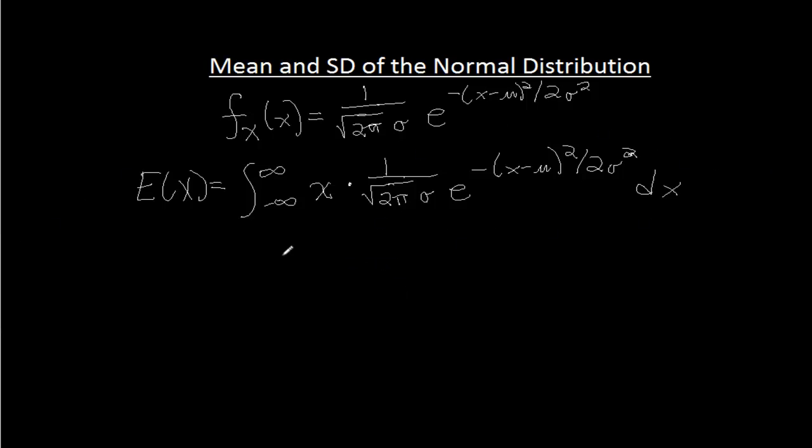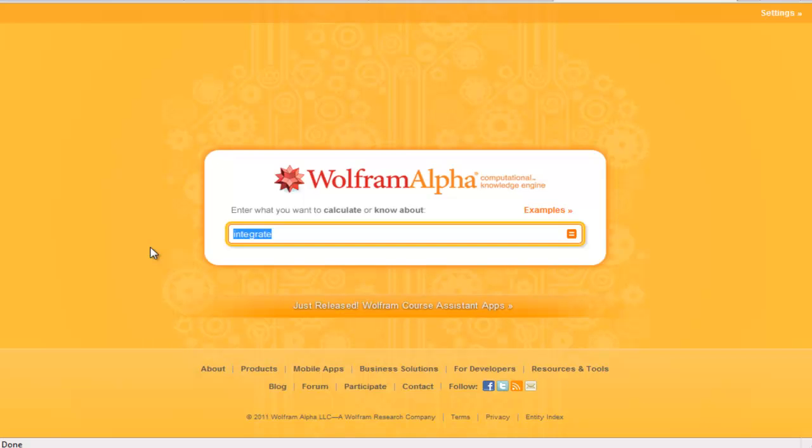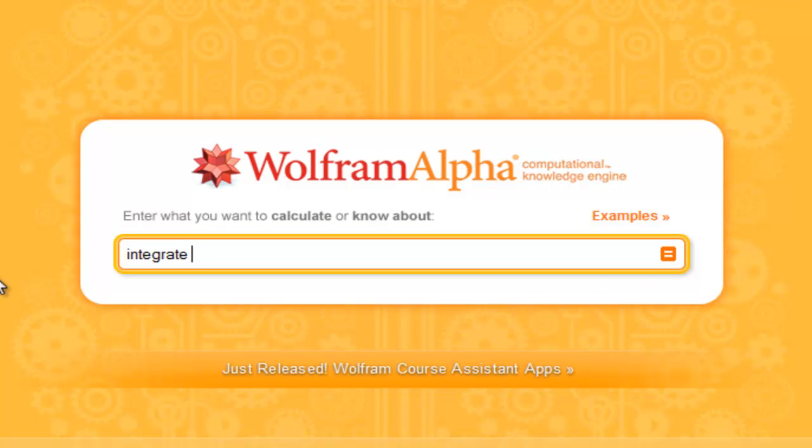Now this integral, it turns out, is a lot of work. It would take me a good 20 minutes to do this calculation by hand. But instead, we are fortunate enough to have Wolfram Alpha, and I want to integrate X divided by the square root of 2 pi sigma, I'm going to represent with S, times e to the power of negative X minus mu, I'm going to represent by M, squared divided by 2 sigma squared. And I want to integrate that from X equals negative infinity to infinity.